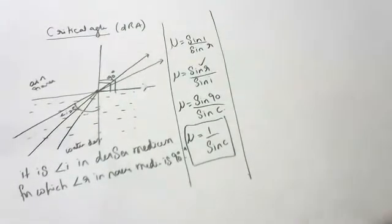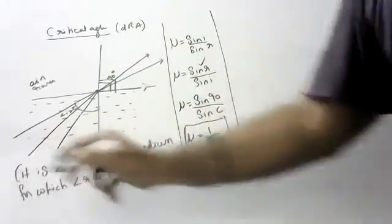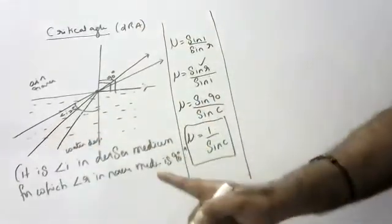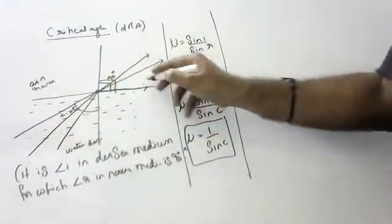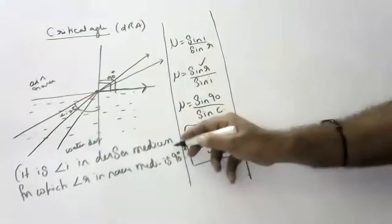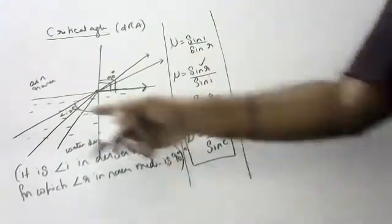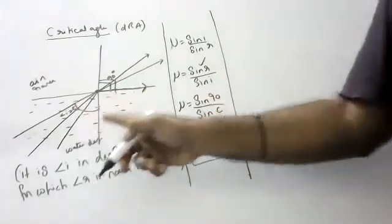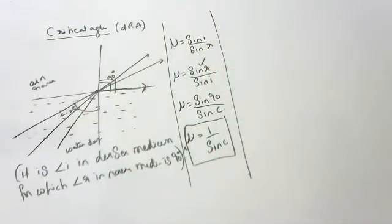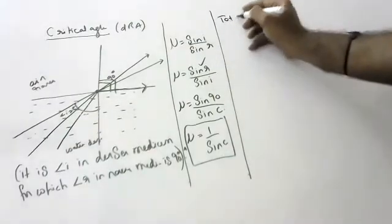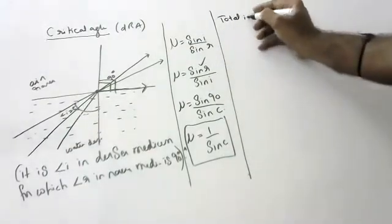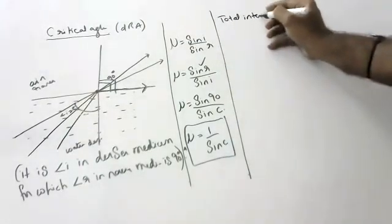So what is critical angle? It is the angle of incidence in denser medium for which the angle of refraction in the rare medium is 90 degrees. Now let's move on to total internal reflection.